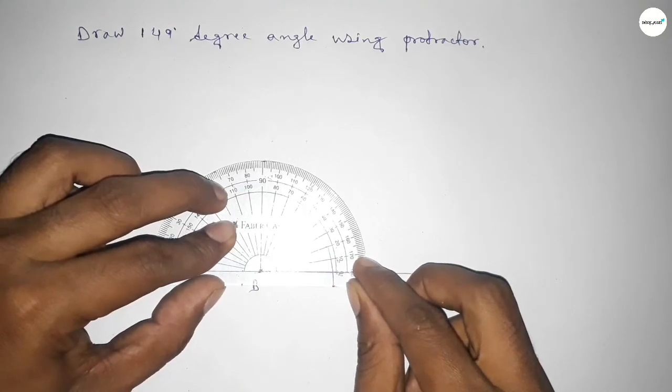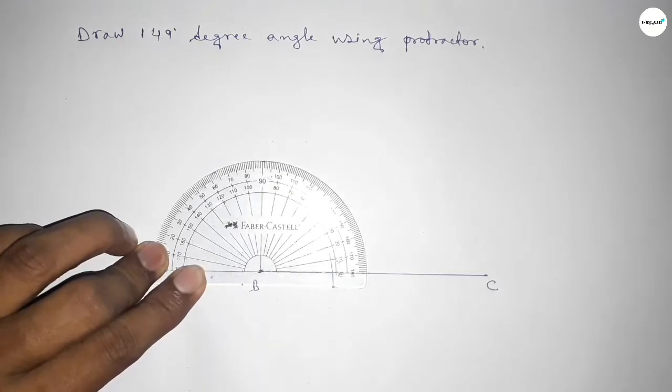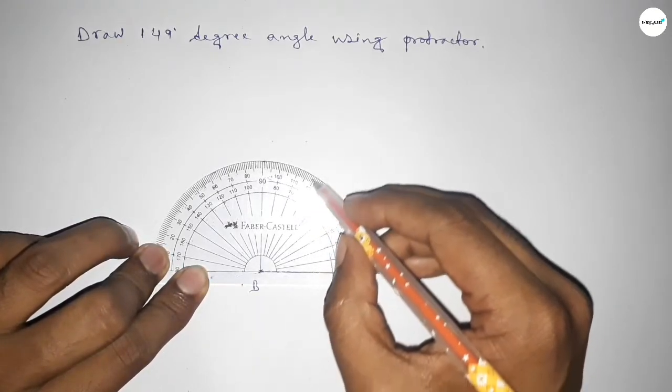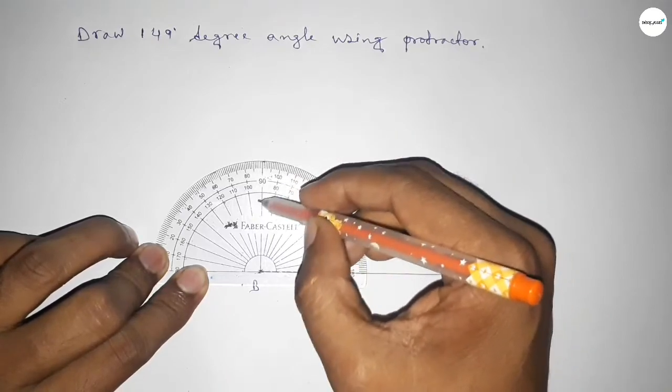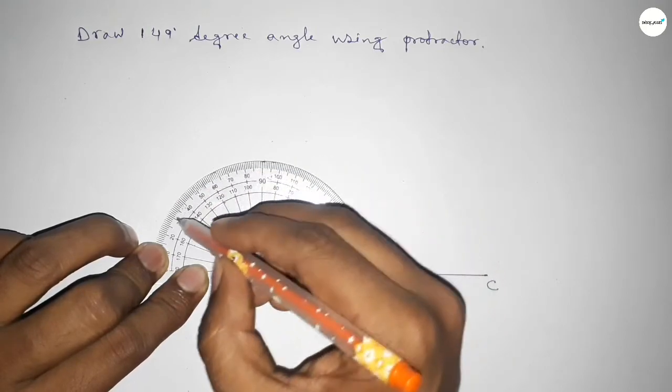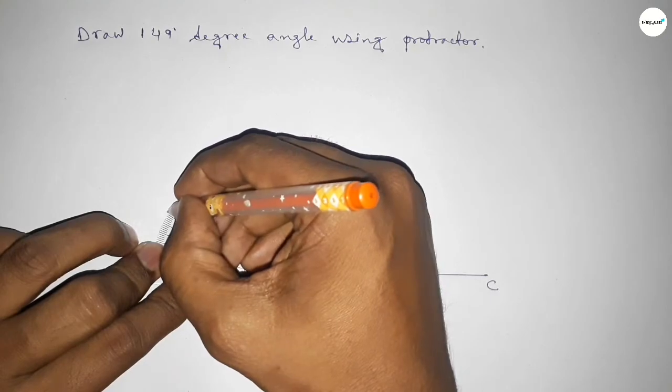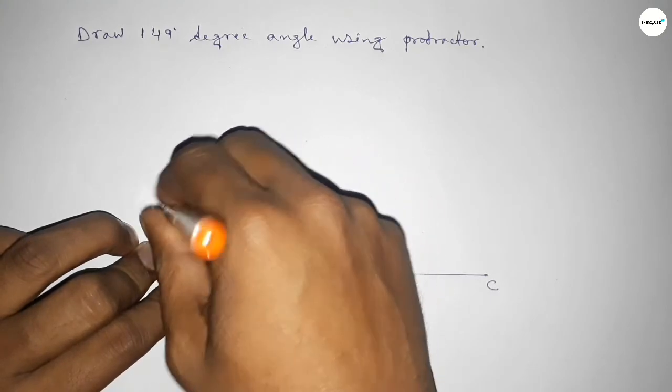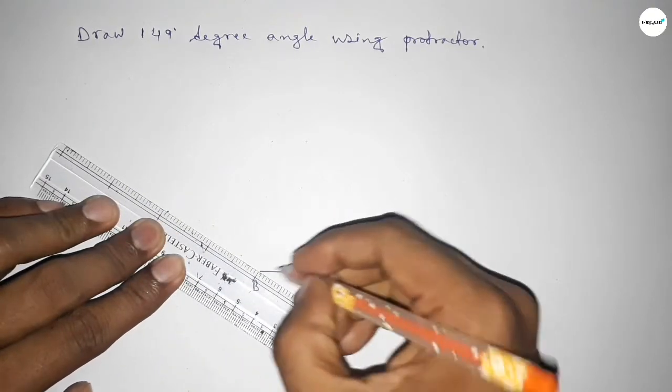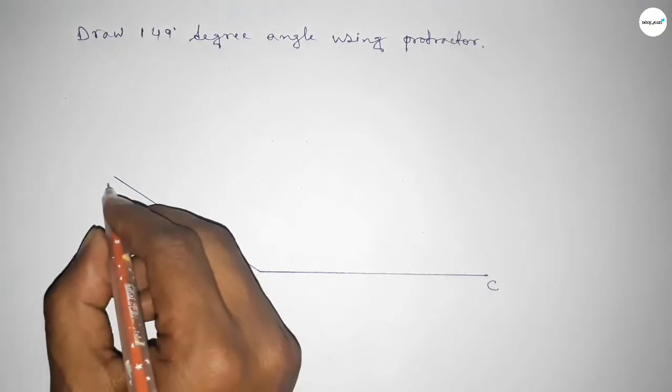This is the starting angle: 0, 10, 20, 30, 40, 50, 60, 70, 80, 90, 100, 110, 120, 130, 140, 145, 146, 147, 148, 149 degrees. So this is 149 degrees. Now we join this to get the 149-degree angle.